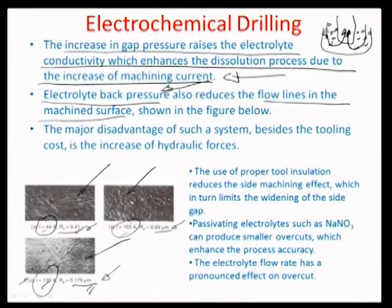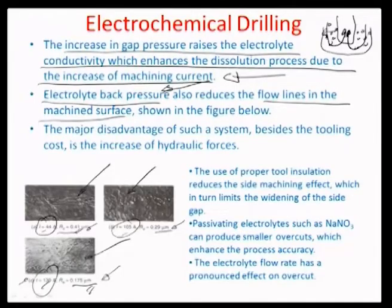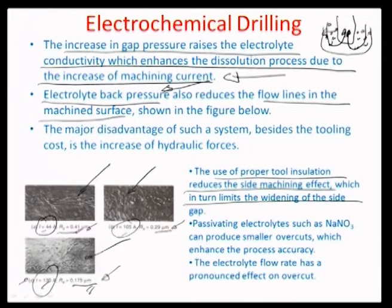Use of proper tool insulation would reduce the side machining effect and in turn would limit the widening of the side gap, allowing for more accurate processes if insulation is proper. If side insulation is not happening, there is a huge amount of CD created because of additional electrochemical transport between the side and the tool face itself.